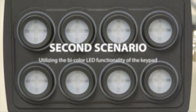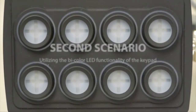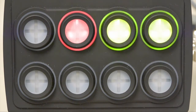The second scenario will utilize the bicolor LED functionality of the keypad. When a particular device or state of a system is enabled, the integrator may want to show the operator that certain other functions are now enabled. We do this by receiving a message and assigning the LEDs on three keys to light simultaneously.